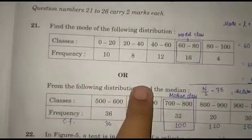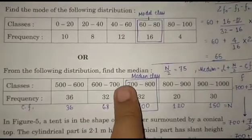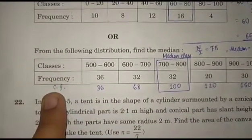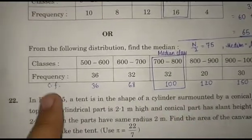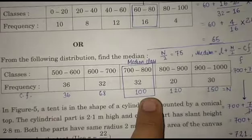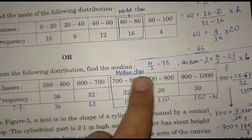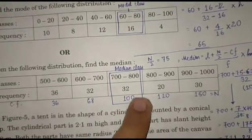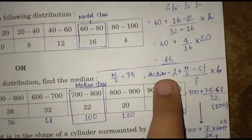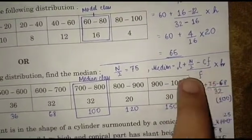We have an OR part in question 21: find the median from the following distribution. For finding the median, first make a row of cumulative frequency: 36, 68, 100, 120, 150. Then define n/2 which is 75, so the median class is 700 to 800. Using the formula median = L + (n/2 - CF) / F × H, we get the median as 721.875.